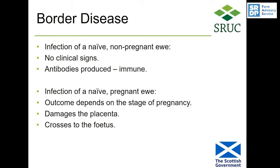She will produce antibodies and then she'll be immune. Problems occur when a sheep meets border disease virus for the first time when they're pregnant. The outcome depends on the stage of pregnancy at which infection occurs, but the virus damages the placenta and also crosses to the fetus.